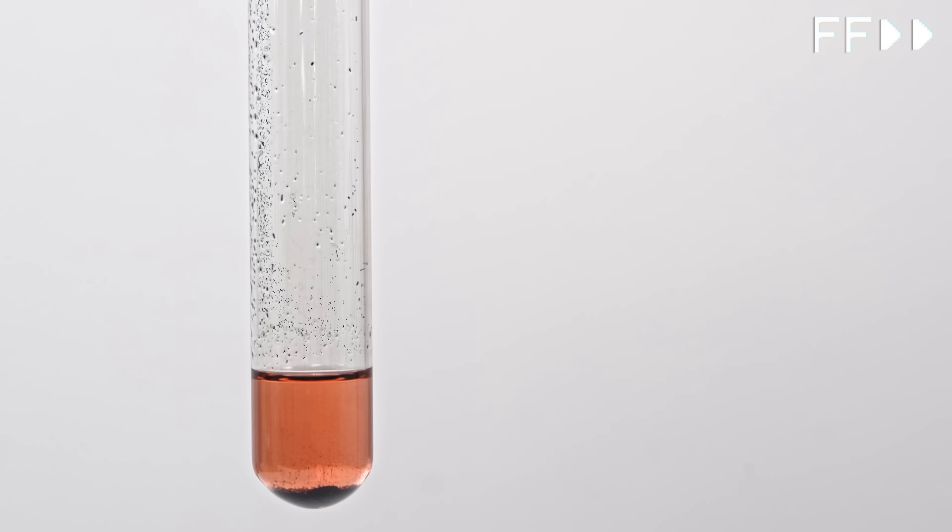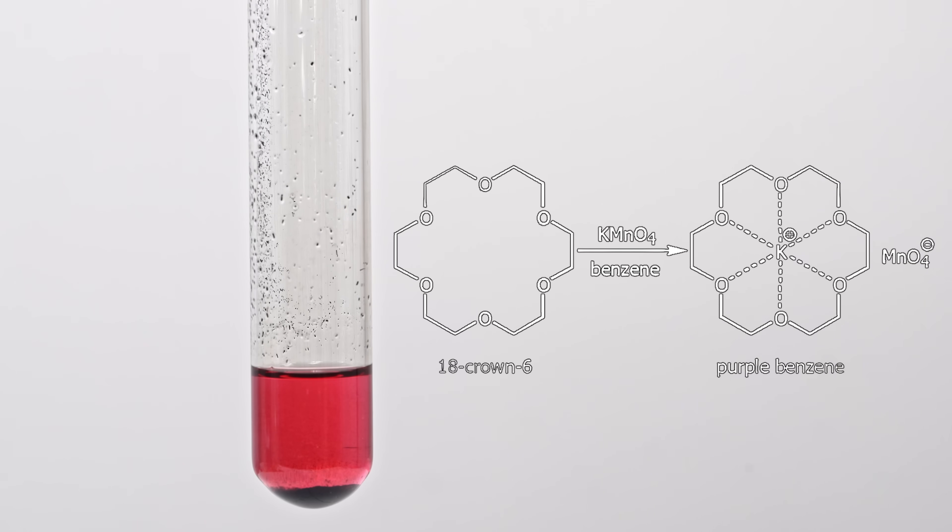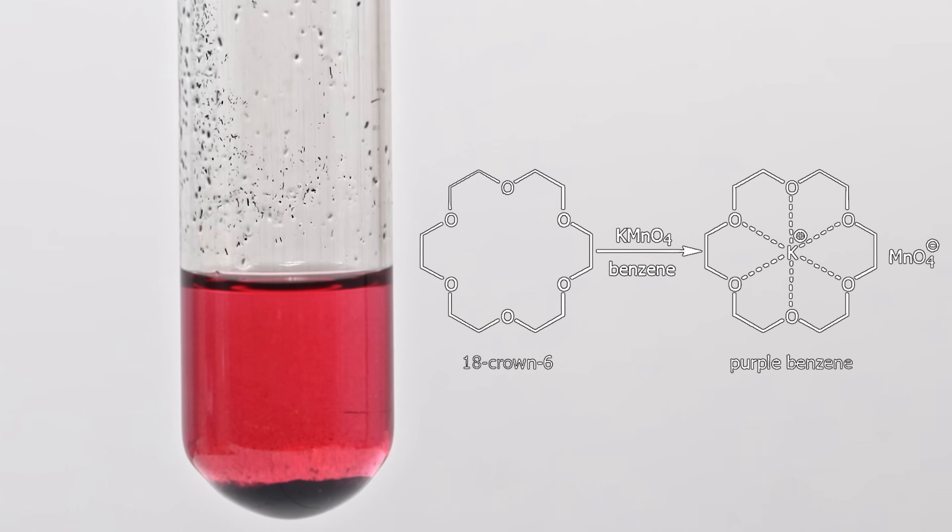This results in an ion pair that's soluble in benzene. When I mix the contents of the test tube, the benzene takes on the purple color characteristic of potassium permanganate solutions. By the way, this is known as purple benzene, and is reactive enough to oxidize toluene into benzoic acid.